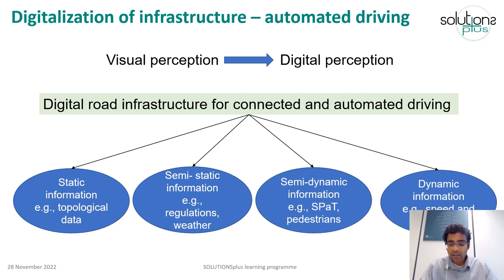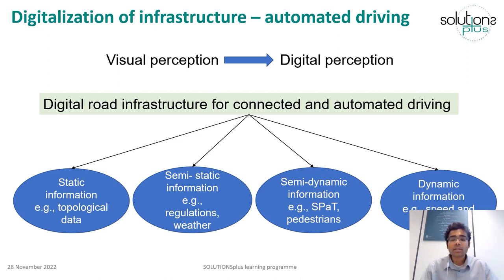Regarding the digitalization of infrastructure: in order to support connected and automated driving, a transformation needs to be made from visual to digital perception. All signs and road configurations need to be digitized so that autonomous mobility is able to use them. Digital road infrastructure can be understood as the integration of multiple digital geolocated information layers containing static information such as topological data, semi-static information such as traffic regulations and weather forecasts, semi-dynamic information such as surrounding vehicles and pedestrians, and dynamic driving recommendations such as lane change and distance gap recommendations.